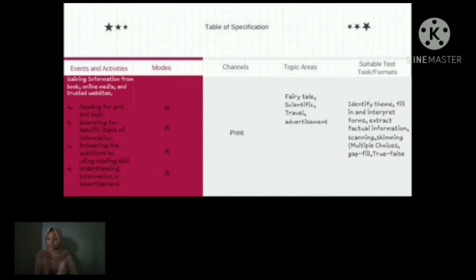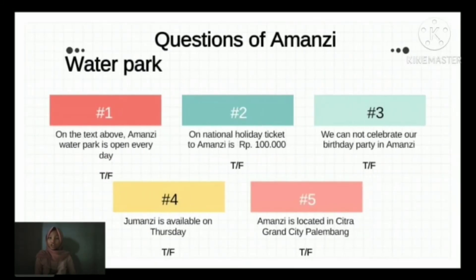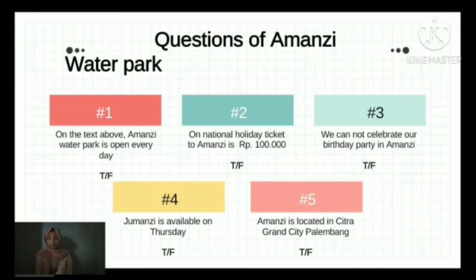The most used reading skill here is scanning. The channel is print. The topic areas are travel and advertisements, and the suitable test format is extracting factual information through scanning, or true or false. There are five questions about Amanji Waterpark using the true or false format. In this format, students must answer the questions to find out whether the sentences are true or false.